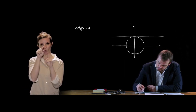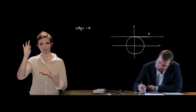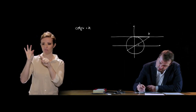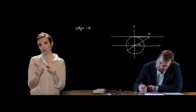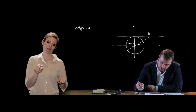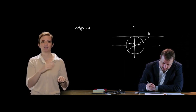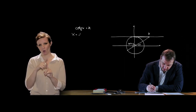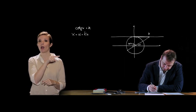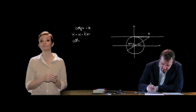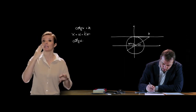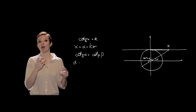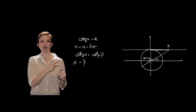Ipotizziamo il valore di k: prolungando troviamo l'angolo α e l'angolo 180° − α, entrambi caratterizzati dallo stesso valore della cotangente. Le soluzioni sono x = α + kπ. Nel caso in cui avessimo cot α = cot β, α sarà uguale a β + kπ.